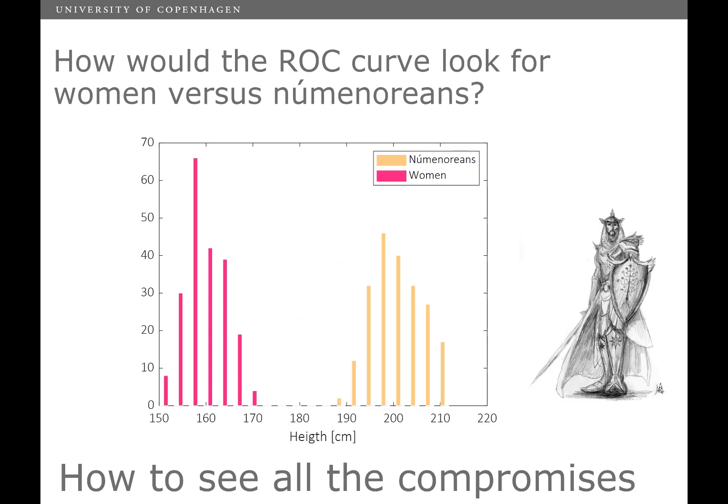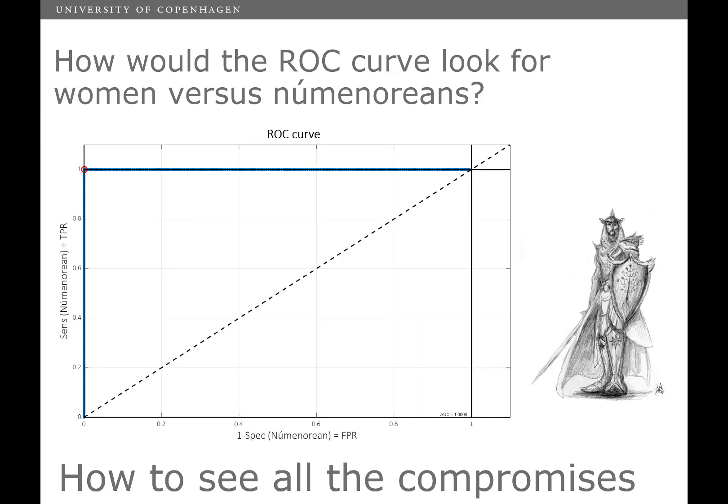So men and women have overlapping heights. If we take some other creature which is more different, I don't know my Lord of the Rings too well, but this apparently is a creature slightly higher than men. And we see now that there's a perfect separation between the two classes. So how would you expect that the ROC curve would look on something like this? Well, that's going to be what we call a perfect ROC curve. That's going to be perfect specificity and sensitivity at the same time. By the way, the red dot is just something shown here in the PLS toolbox. It's indicating what the actual threshold is, the threshold that was chosen automatically by the software.